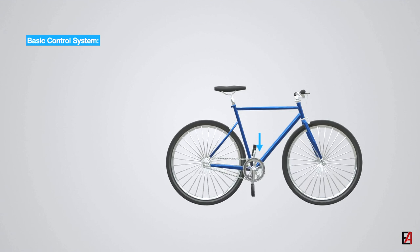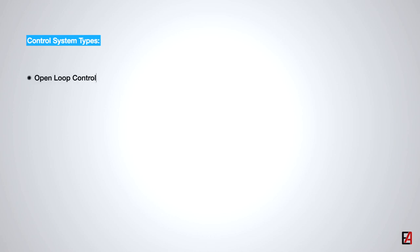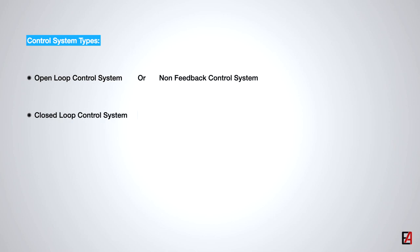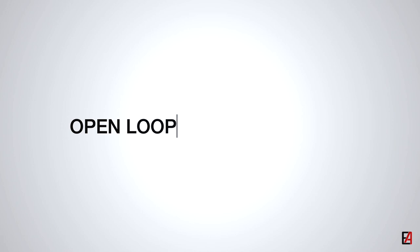The two different types of control systems are the open loop control system, also called the non-feedback control system, and the closed loop control system, also called the feedback control system. Let's see about the open loop control system first.